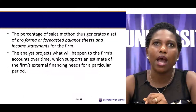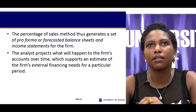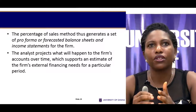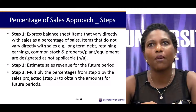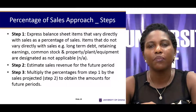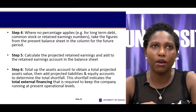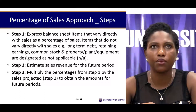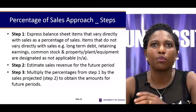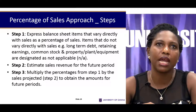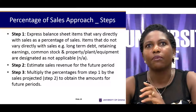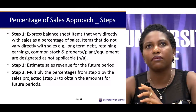Once these are done, the percentage of sales method will generate the forecasted financial statements. By putting the financial statements — especially the balance sheet — in place, the firm is able to identify whether or not it may need additional financing to achieve its estimated growth projections. To walk through the percentage of sales approach: first, you express your balance sheet items that vary directly with sales as proportions or percentages. The items that do not necessarily vary directly with sales are long-term debt, retained earnings, and common stock.